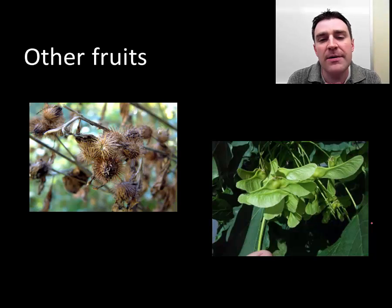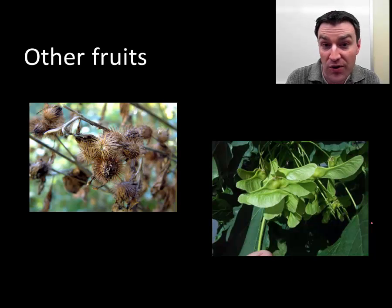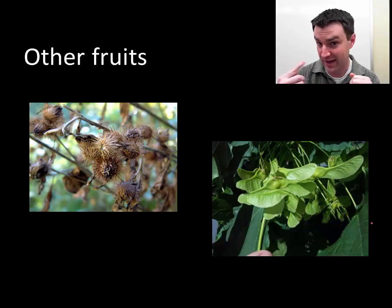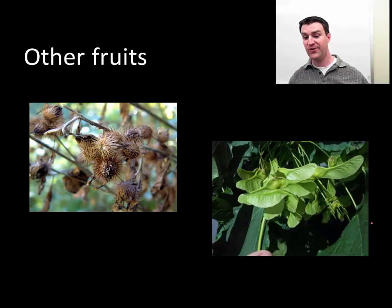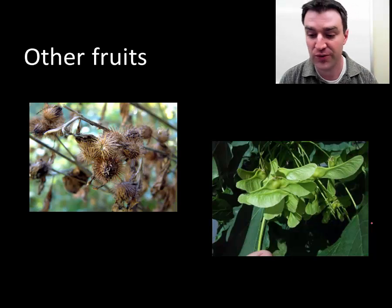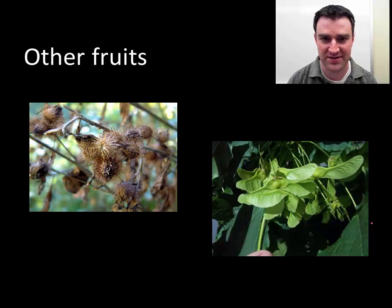We biologists define a fruit as any structure that distributes offspring. So burrs can represent fruits because there are seeds inside of them, and even helicopter fruits that use the wind to travel far away represent a type of biological fruit — anything that gets seeds far away is the general plan.